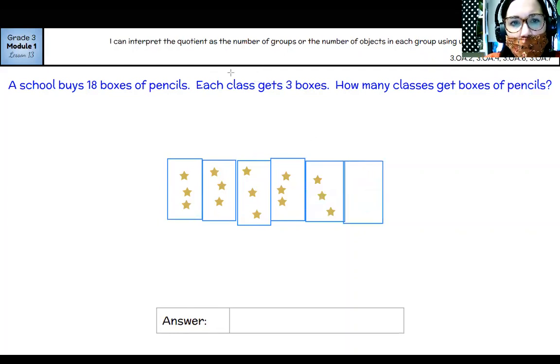I think I got one more. That makes 18. Three, six, nine, 12, 15, 18. So that means that 18 divided by three equals six.